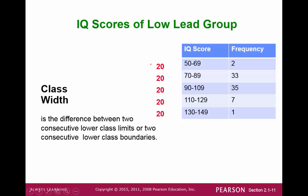The class width would be taking a look at the difference between any two consecutive upper or lower class limits. And if you did your frequency distribution correctly, all these class widths should be the same.